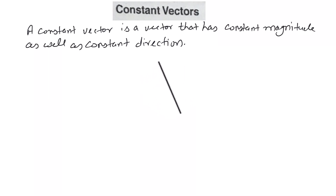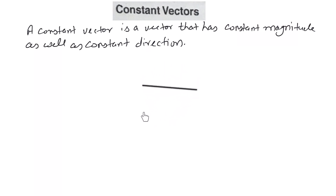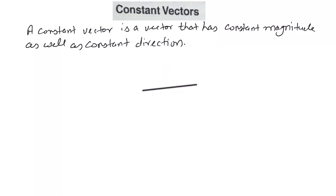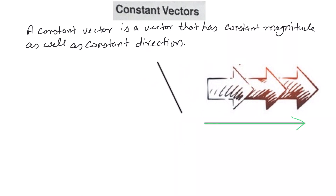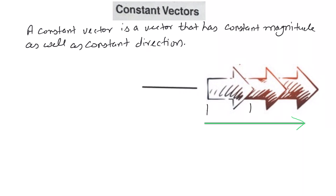If we say some vector has constant magnitude but the direction is not constant, then we say that it is not a constant vector. This vector is not a constant vector because it is continuously changing its direction. Its magnitude — its length — is constant, but its direction is continuously, instantaneously changing. Now see this example: this vector has a constant length, its direction is constant, and its magnitude is constant.